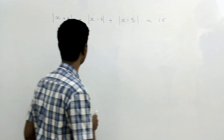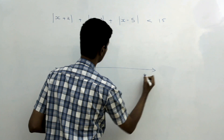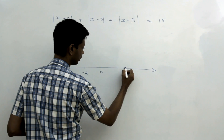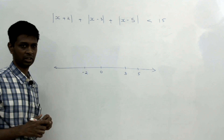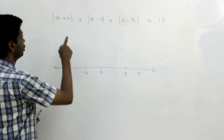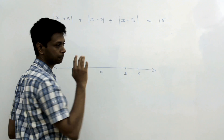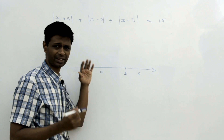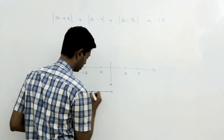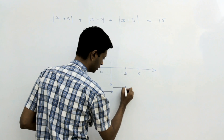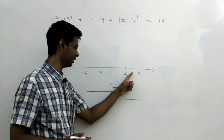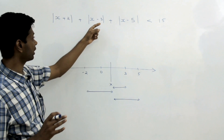Let us go back to the number line. The points I am interested in now are -2, 3, and 5. I am going to mark these: there is 0 in the middle, -2 here, +3 here, and +5 here. Any point x I choose — here, here, or here — I am effectively thinking about distances to -2, +3, and +5. So let me choose a point somewhere in the middle. If I choose x here, then this expression is effectively the distance from x to -2, plus the distance from x to 3, plus the distance from x to 5.